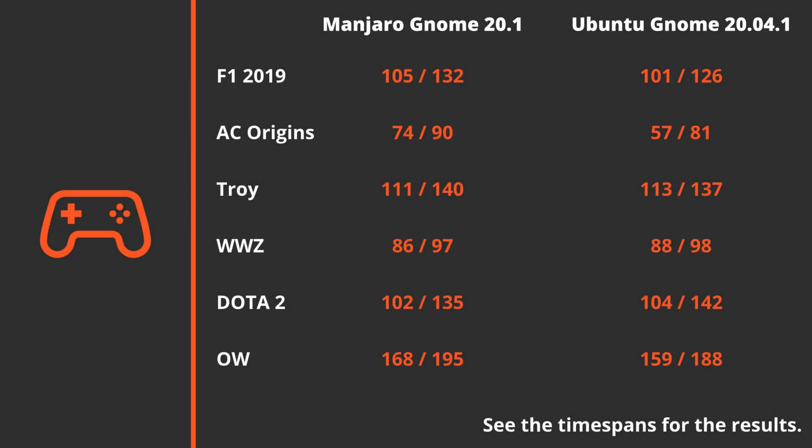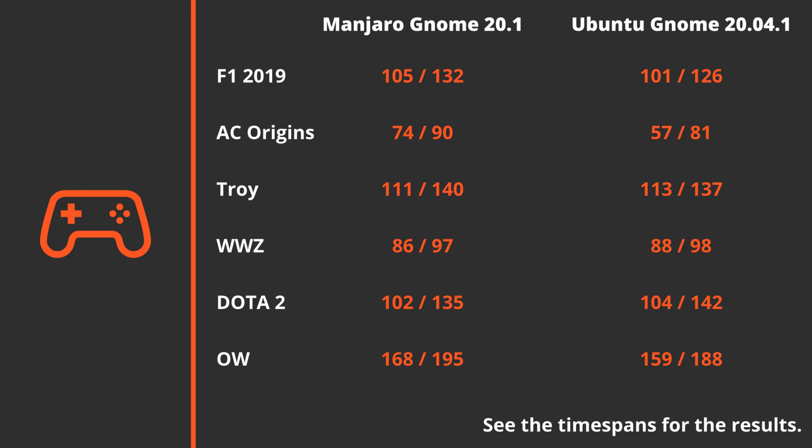In most of the games the difference is very little, except Assassin's Creed Origins and Overwatch, where the FPS numbers differ the most. The rest of the games I find they are within a margin of error.